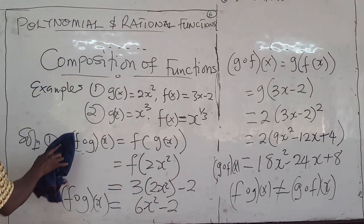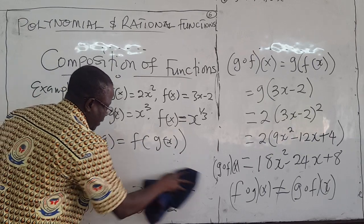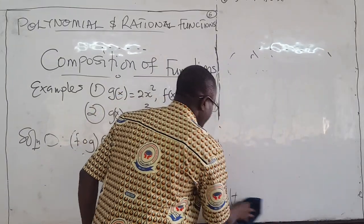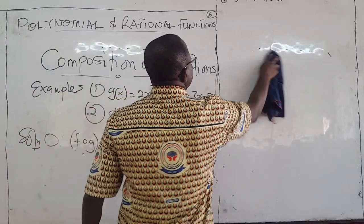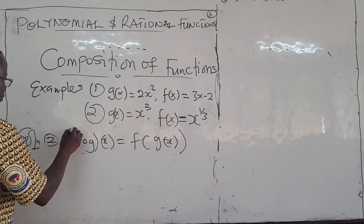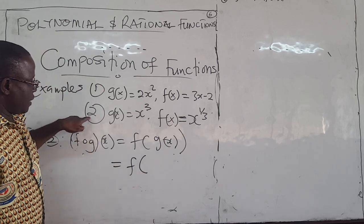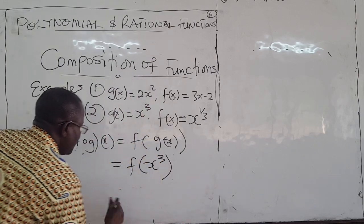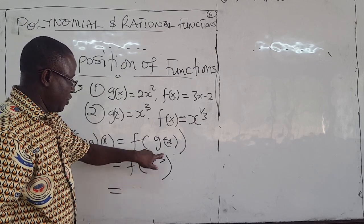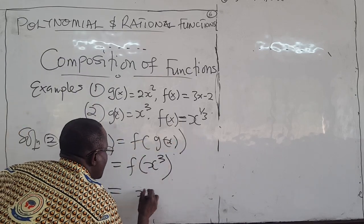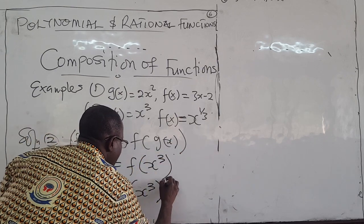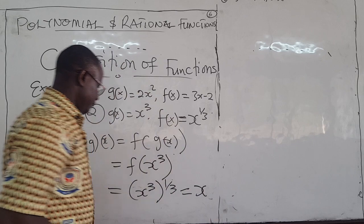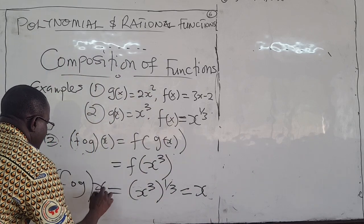Let's finish with example 2. G of X is X cubed and F of X is X to the power of 1 over 3. Finding F of G of X: take function F and wherever you see X, put X cubed. So we have X cubed raised to the power of 1 over 3. That gives X to the power of 3 times 1 over 3, which equals X to the power of 1, which is just X.